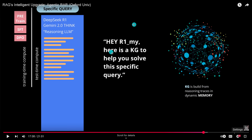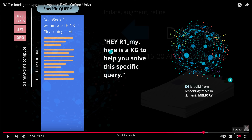In the simplest case, I just take a model like R1 and say: here's my knowledge graph with my particular preferences, my particular way of reasoning, what is important to me — use this knowledge graph to solve a specific query.